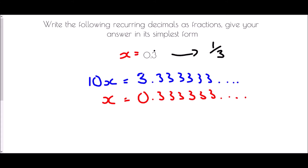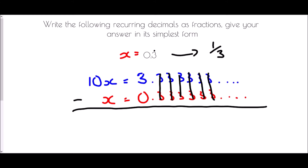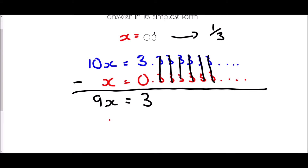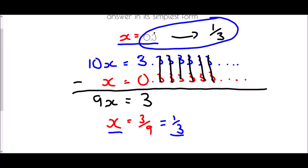Now if we do a little subtraction: the 3s cancel all the way down until we're left with 3 take away 0, which is 3. 10x minus x gives 9x, so 9x equals 3. Dividing by 9 gives x equals 3 ninths, which simplifies to 1 third. Therefore, since x equals 0.3 recurring and x equals 1 third, 0.3 recurring must equal 1 third.